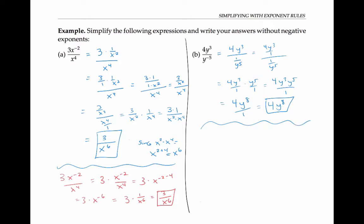Alternatively, I could decide to use the quotient rule first. As in the previous problem, I can write this as 4 y to the cubed minus negative 5 by the quotient rule, and so that's 4 y to the eighth, as before.